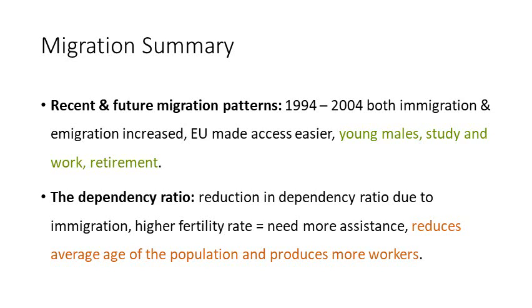Some people also move for retirement — we see large numbers from the UK move to places like Spain to retire in a warmer climate. We also need to think about the effect migration has on the dependency ratio. Higher immigration actually reduces the dependency ratio, because if more young people come to the UK, start families, start working and paying taxes, that helps pay for elderly people using services more. These migrants also tend to bring a higher fertility rate, meaning more children who will eventually work and pay taxes, helping with the ageing population issue.